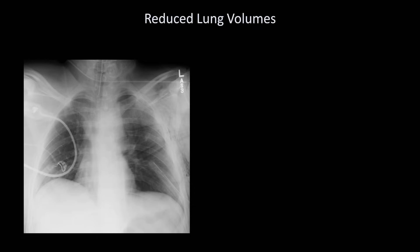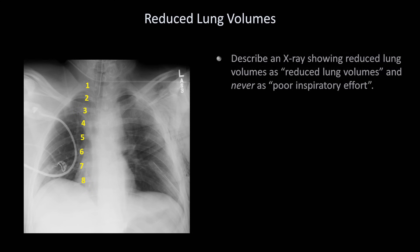The first topic in this video will be a brief discussion of lung volumes. Here is an x-ray showing an example of reduced lung volumes. We know this because when we count ribs, there are only seven full posterior ribs seen above the diaphragm, where normally there should be nine to ten. When describing an x-ray with reduced lung volumes, it is important to describe it specifically as such, and never as 'poor inspiratory effort,' which is frequently done.